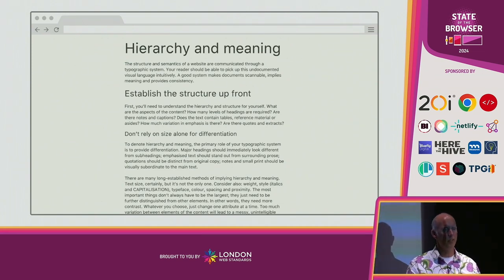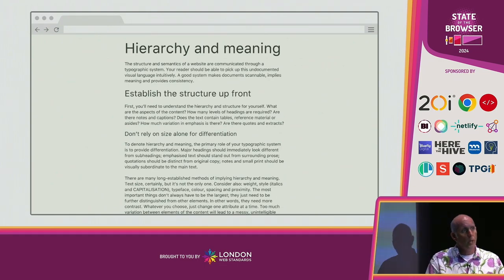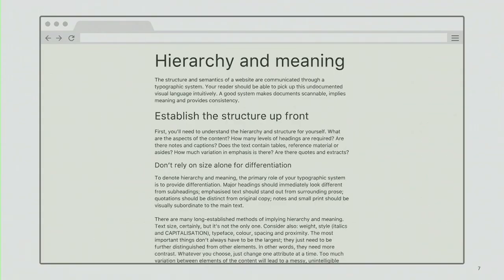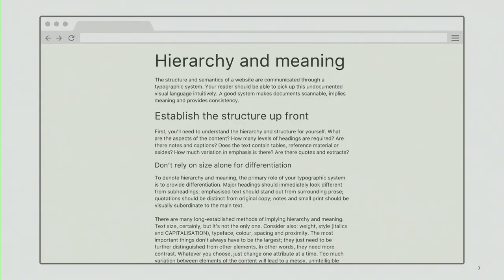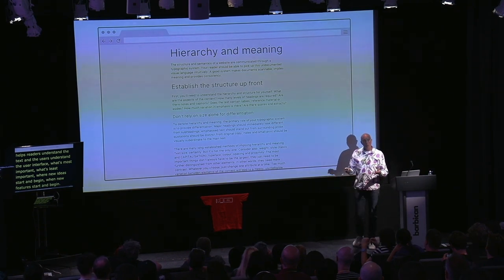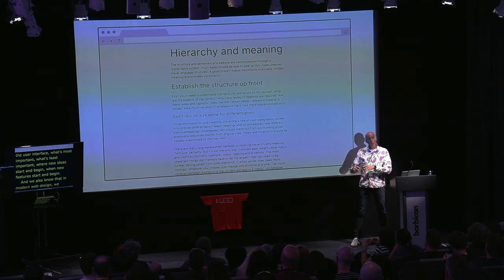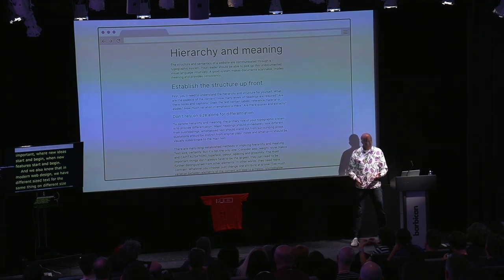The question we need to ask ourselves is: why do we have a type scale at all? Why do we even have different sizes of type? Well, the answer is typographic hierarchy. Hierarchy helps readers understand the text and users understand the user interface. It helps us understand what's most important, what's least important, where new ideas and features start and begin. And we also know that in modern web design, we have different size text for the same thing on different size screens.